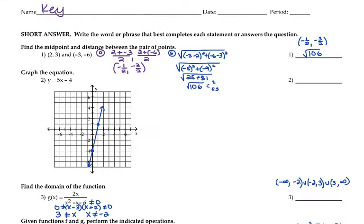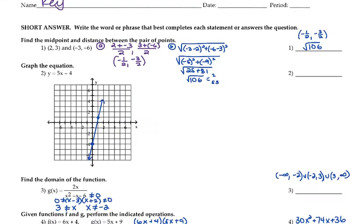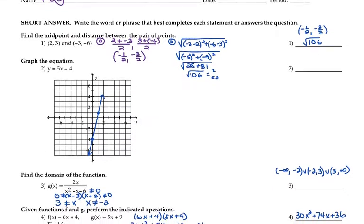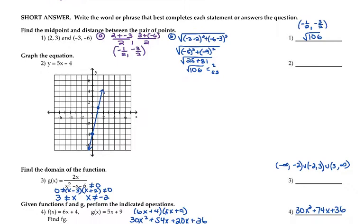So for number 1, you should have gotten the midpoint of negative 1/2, negative 3/2, and the distance of square root of 106, which, if it can be reduced, needs to be.